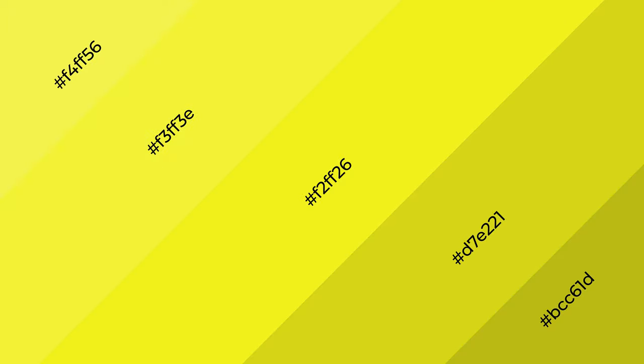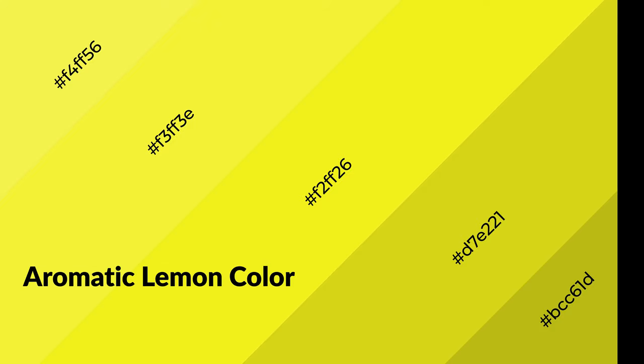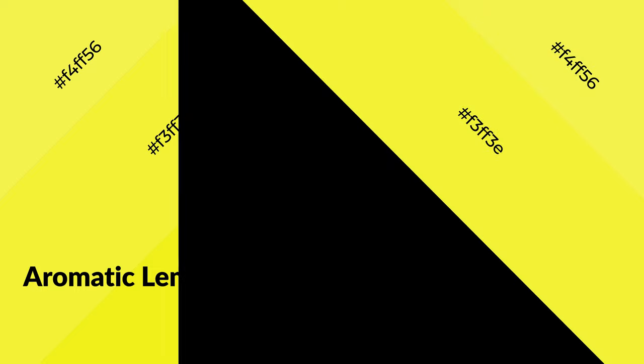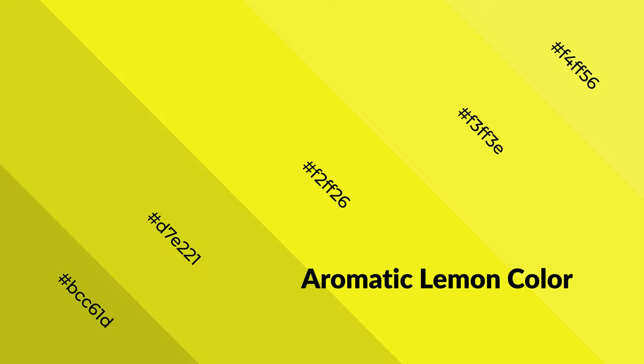Aromatic lemon is a warm color and it emits cozier and active emotions. Warm colors are symbols of warmth, fire, heat, and sunshine. It also evokes joy, passion, love, and even anger. You can see them used in restaurants and gyms.